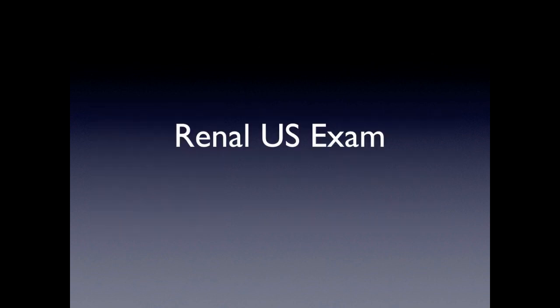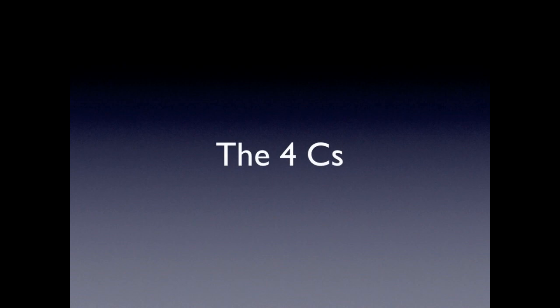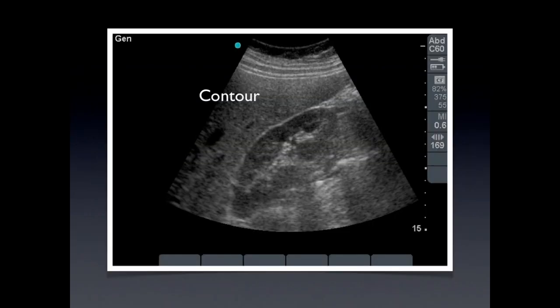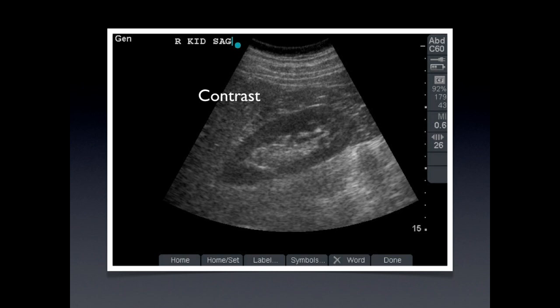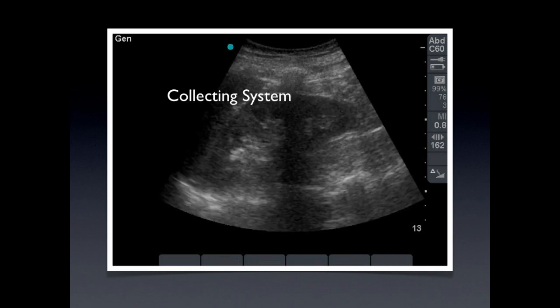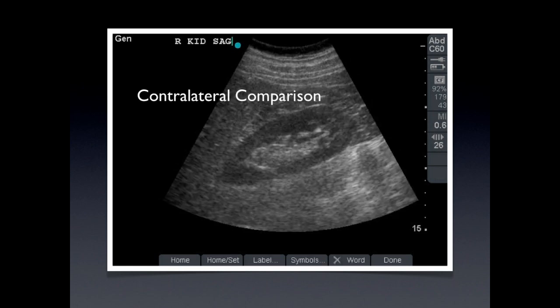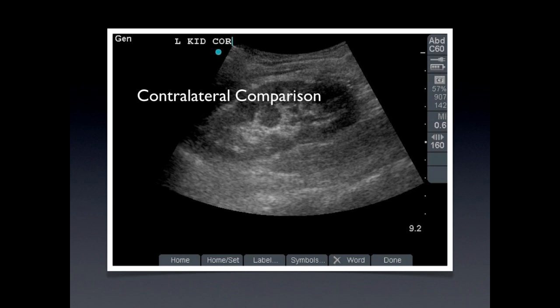During our bedside ultrasound exam, we have the four C's. The first C stands for contour, and it basically means we're going to measure that kidney — 9 by 9 to 13 would be normal. Transverse view, we've seen 3 by 5. Contrast talks about echogenicity, which areas are hypoechoic versus hyperechoic. We looked at the collecting system to make sure there's no dilatation there. And last, we talk about contralateral comparison — you want to check both kidneys.